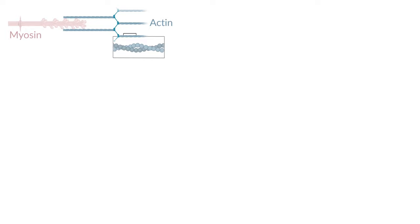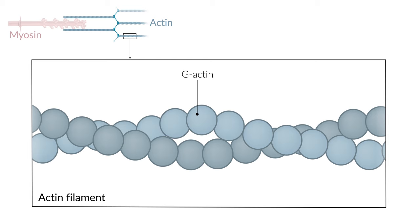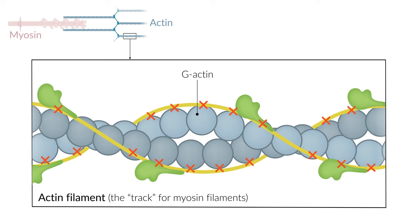Let's move on to actin. Actin filaments are double helices formed by aggregation of globular actin monomers. Several regulatory proteins stabilize the structure. Actin filaments act as the tracks along which myosin moves under ATP consumption. However, this track isn't always free. By binding to actin, regulatory proteins prevent permanent interaction with myosin to guide the muscle's contraction process. These are tropomyosin and troponin.